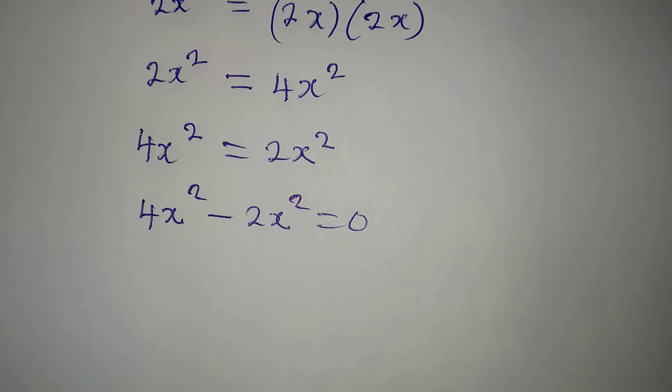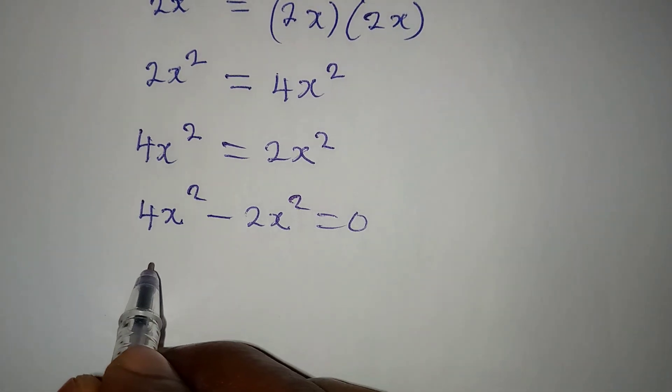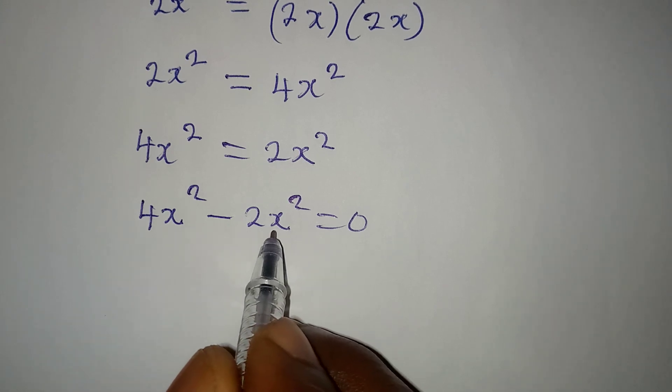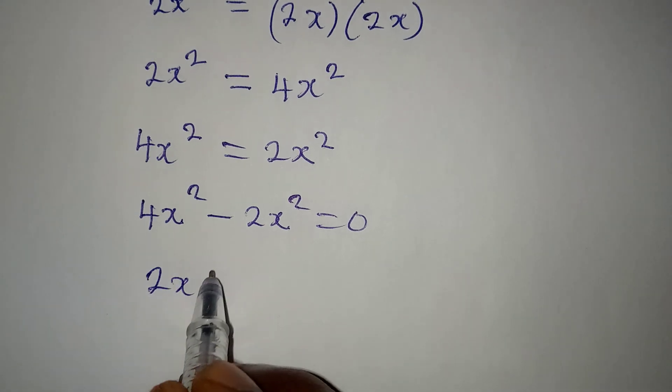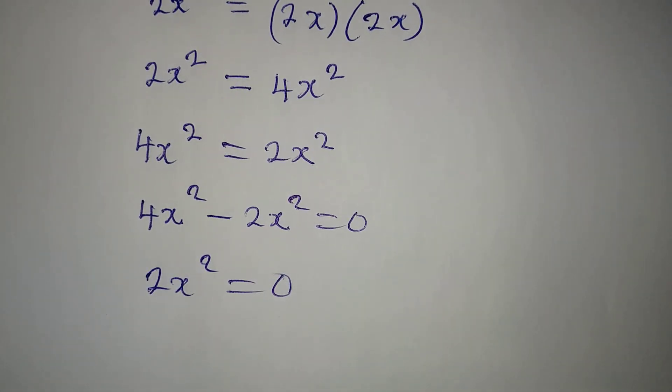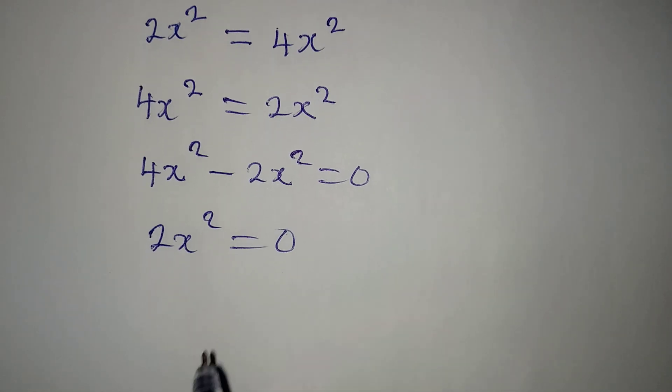As a matter of fact, we already know what the value will be. From here we can factor out. If you do this, this will give 2x² = 0.